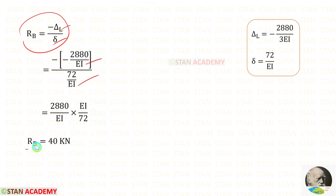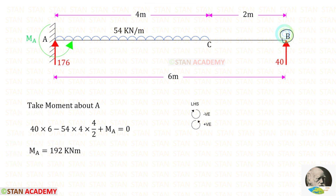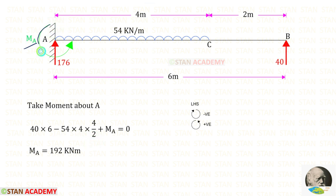We have found delta_L and delta. Applying them, RB equals minus delta_L upon delta, giving RB equals 40 kN. Now applying sigma V equals 0, we find RA. Taking moments about A from point B, RB acts anti-clockwise (positive) and the UDL acts clockwise (negative). Assuming MA acts anti-clockwise (positive), we get a positive value for MA, confirming our assumption is correct — MA acts in the anti-clockwise direction.